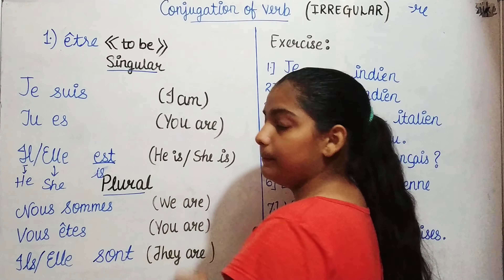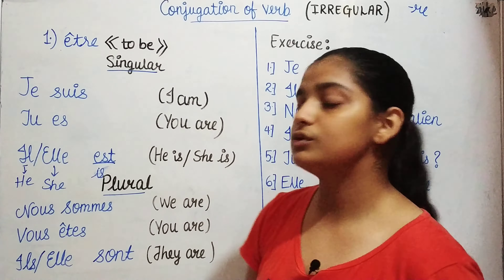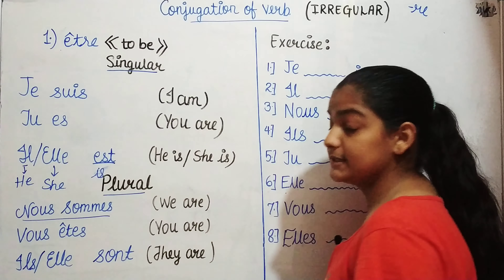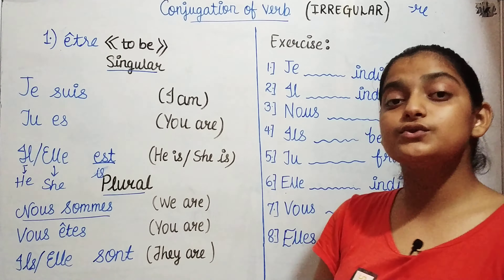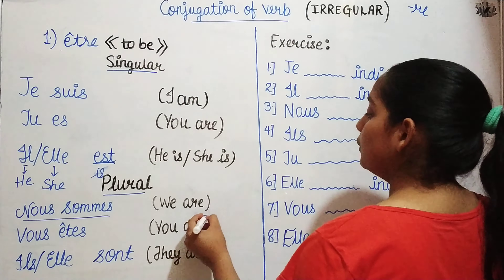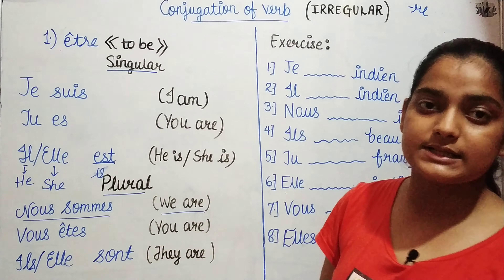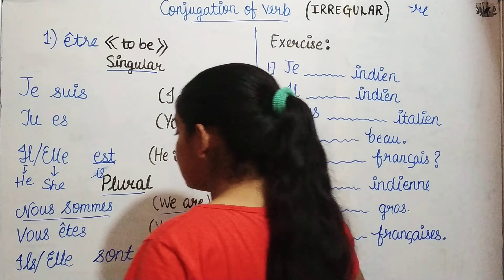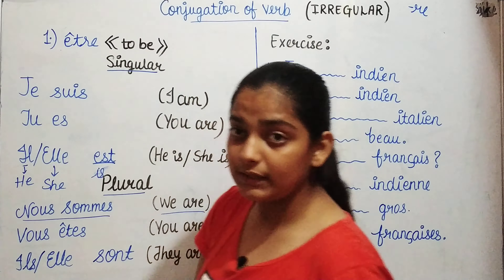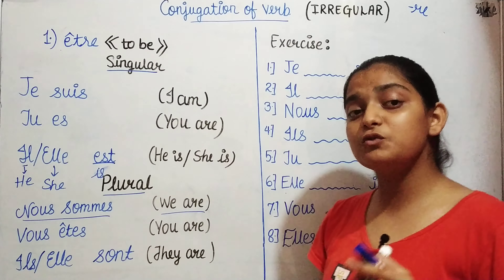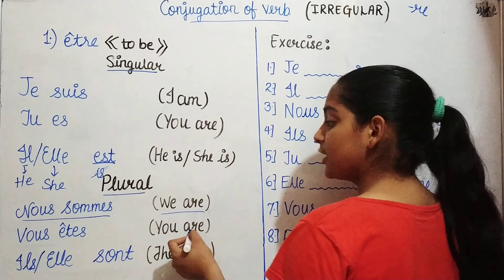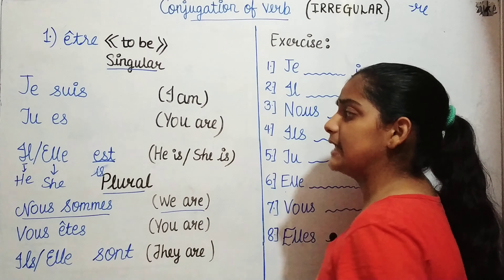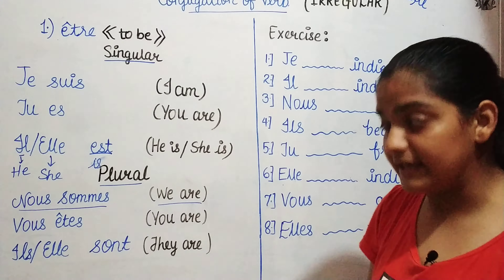Now let's look at the plural part. The plural starts with nous sommes, which means 'we are.' Next is vous êtes, which means 'you are.' Now you might think these two are the same, but they are not.